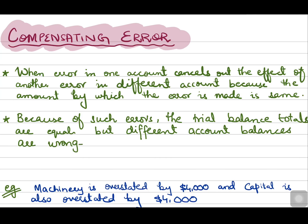In this video we will be learning about compensating errors. What is unique about this error is that it affects two or maybe sometimes more than two accounts which are independent of each other. This error is not made by just recording a transaction wrongly in both accounts. In error of omission, the transaction used to be omitted from the records, so we corrected it by recording the transaction just as it should have been recorded.